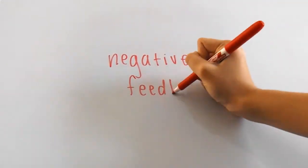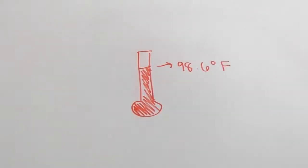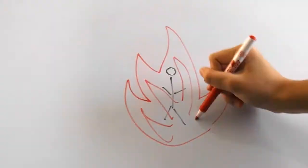This is a great example of negative feedback, as the body needs to be at a certain temperature range in order to function well, or else you'll burn or freeze to death.